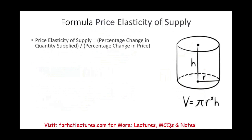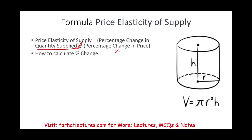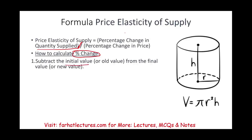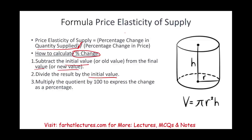Starting with the formula — it is the same as price elasticity of demand: the percentage change in quantity supplied divided by the percentage change in price. To find the percentage change, subtract the initial value from the final value to get the change, divide the result by the initial value, then multiply by 100 to express it as a percentage.